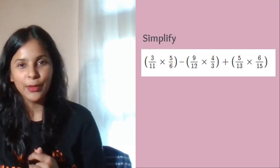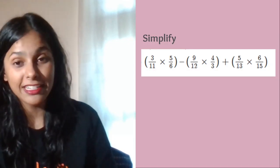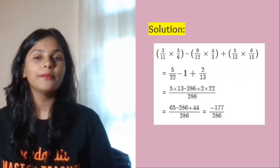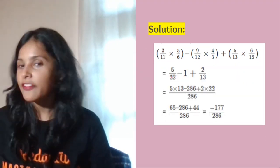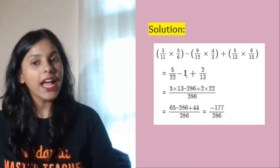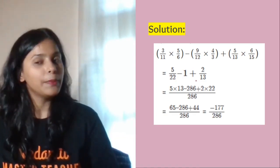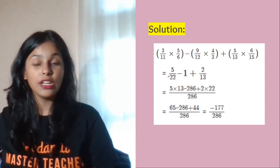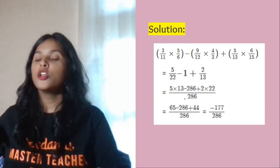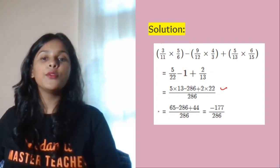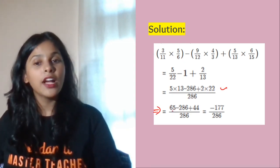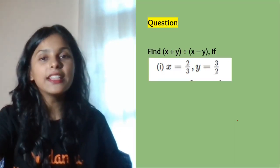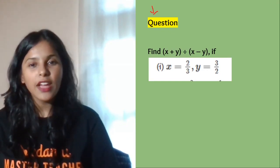Next question: simplify into the lowest form. By simplification, you get 5 by 22, and then 1 and 2 by 13. Make the denominators the same — the LCM is 286. Change the numerators accordingly, then compute 65 minus 286 plus 44, which equals minus 177 upon 286. That is the simplified answer.